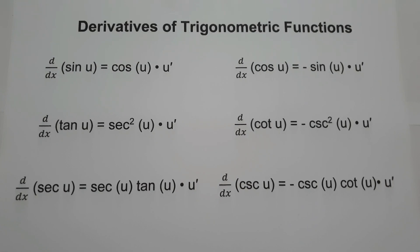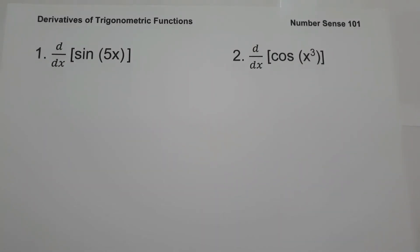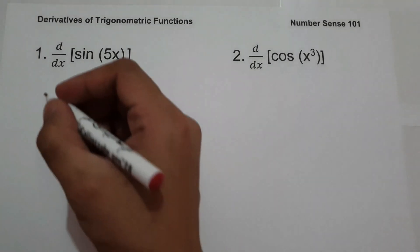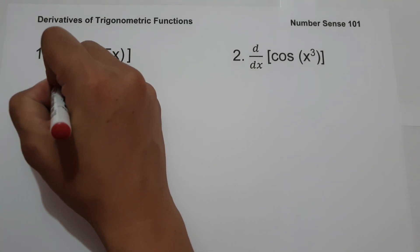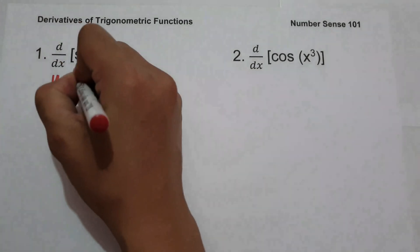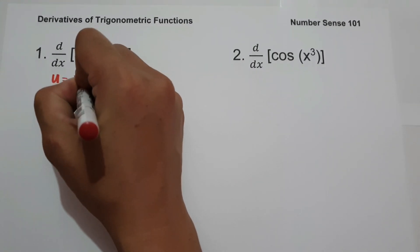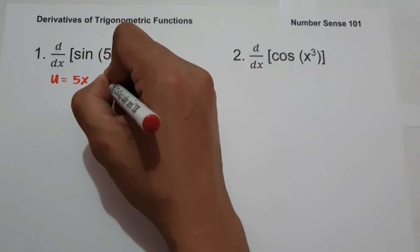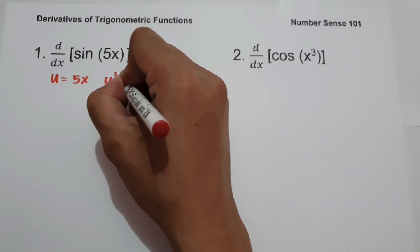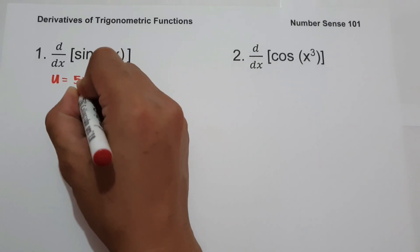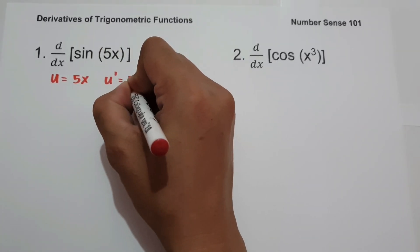Let's start with an example. On the first example, what is the derivative of sin(5x)? To find the derivative of sin(5x), let us identify the value of u, which is 5x. And the value of u', that is the derivative of 5x, which is 5.